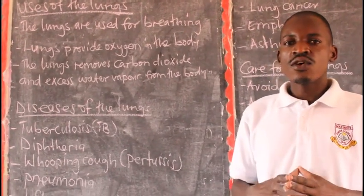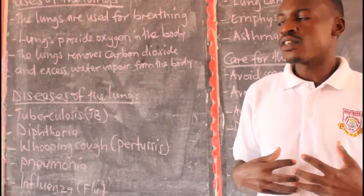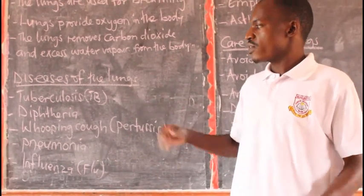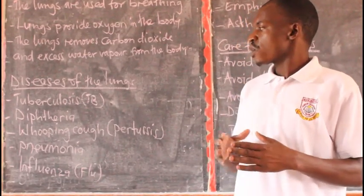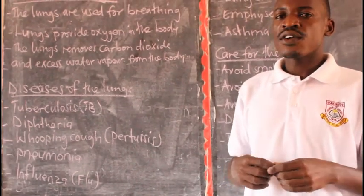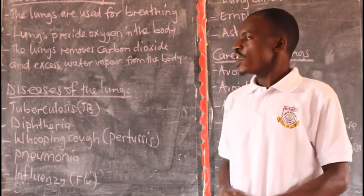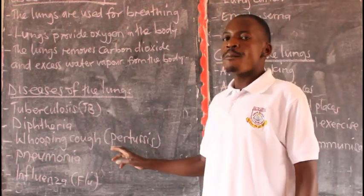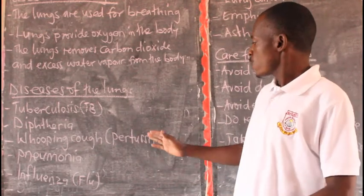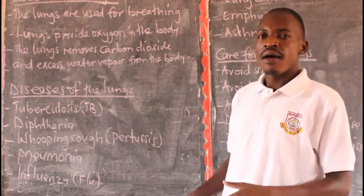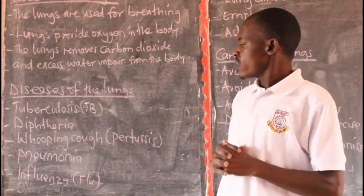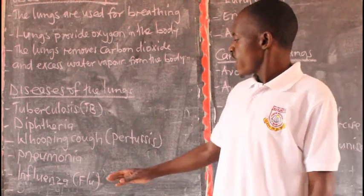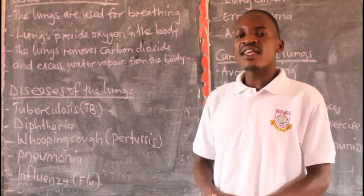Now we have some diseases that affect the lungs. Which are some of the diseases that can affect our lungs? One, we have what we call tuberculosis. Two, we have what we call diphtheria. Three, we also have a disease called whooping cough, and the medical name for whooping cough is pertussis. Then there is a disease called pneumonia. Then we have a disease called influenza, or flu.